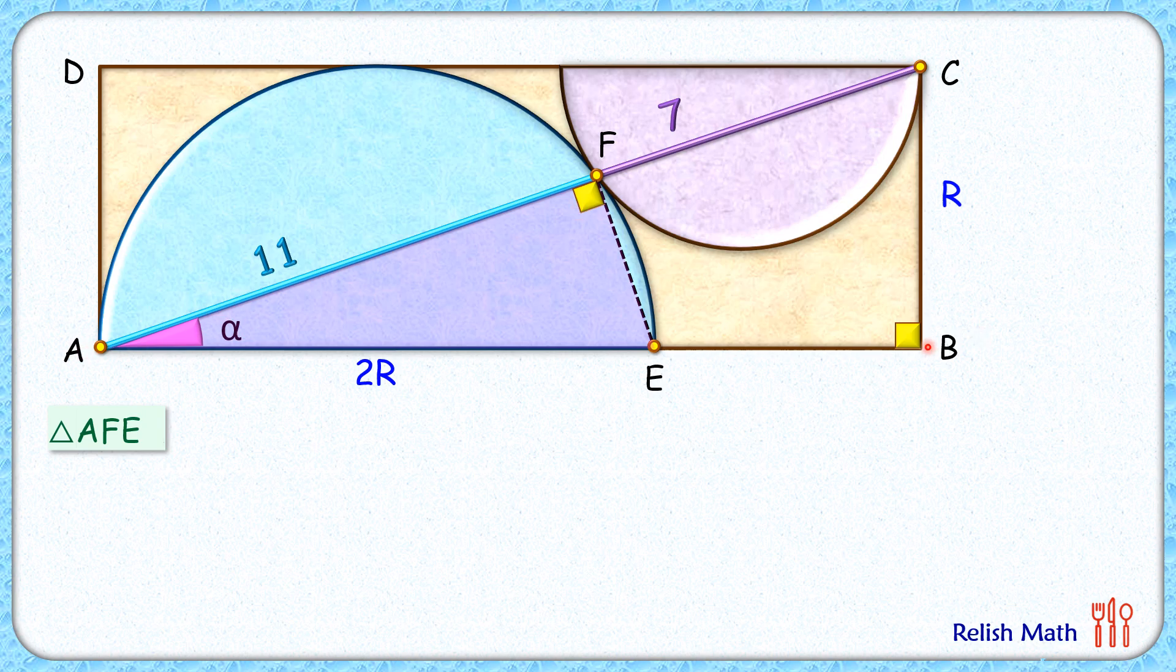And triangle ABC also has got a 90 degree angle and angle alpha in it. Thus these triangles are similar to each other by angle-angle similarity. As the triangles are similar, the ratio of corresponding sides will be equal.